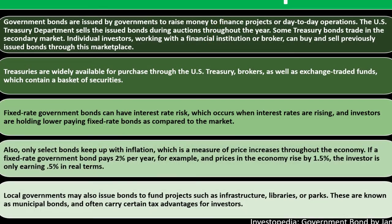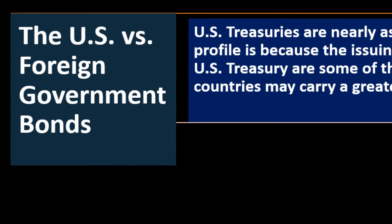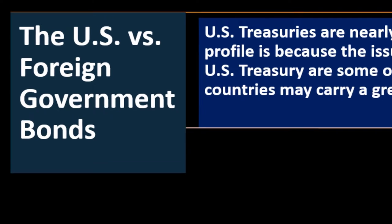Local governments may also issue bonds to fund projects such as infrastructure, libraries, or parks. These are known as municipal bonds and often carry certain tax advantages for investors — the income may not be included in taxable income, meaning you effectively receive a more beneficial rate of return since the government is not taking a portion of it.